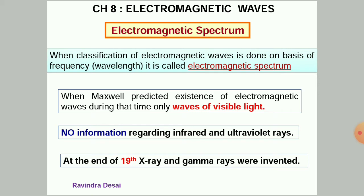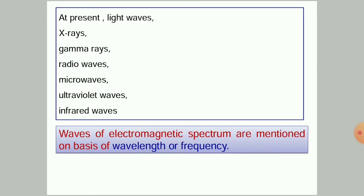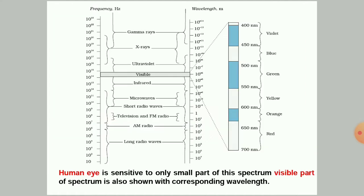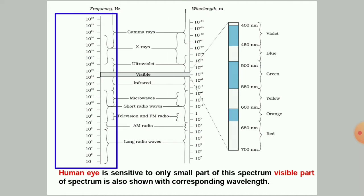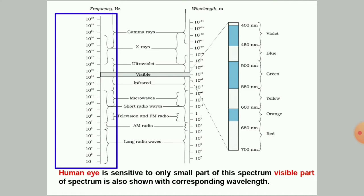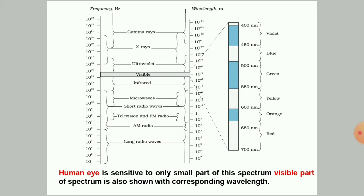The electromagnetic spectrum refers to the classification of electromagnetic waves done on the basis of frequency or wavelength. Currently we have different types of waves: light waves, X-rays, gamma rays, radio waves, microwaves, ultraviolet waves, and infrared waves. These different types of waves of the electromagnetic spectrum are arranged on the basis of frequency or wavelength. The right side column shows wavelength in meters and the left side column shows frequency in Hertz, with each type of wave having its own scheduled range.